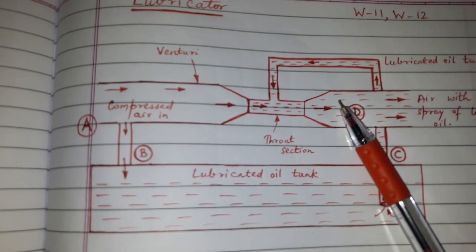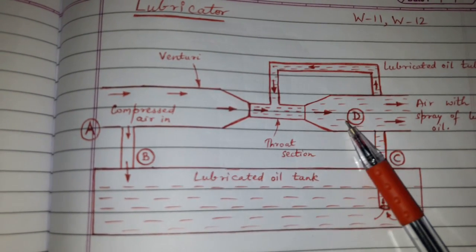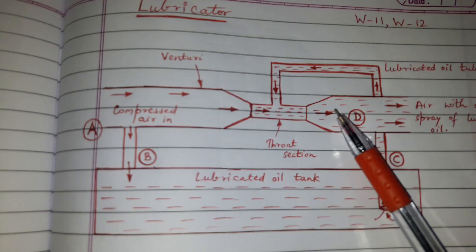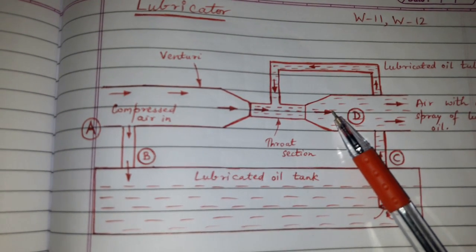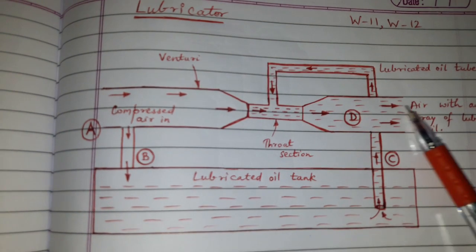Air goes further, crosses the throat section and enters into the venture portion D. The pressure again builds up due to diverging portion and air plus oil droplets go out.